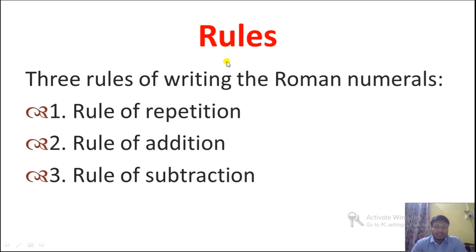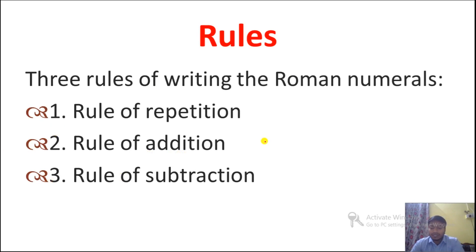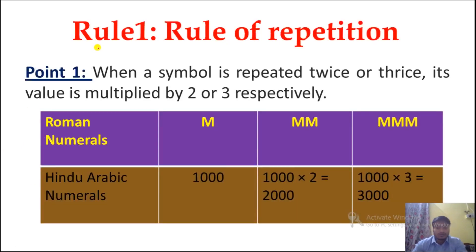Now we are going to discuss the rules to write and read Roman numerals. We have 3 rules: Rule of Repetition, Rule of Addition, and Rule of Subtraction. Let me discuss them one by one. So rule number 1 is the Rule of Repetition.